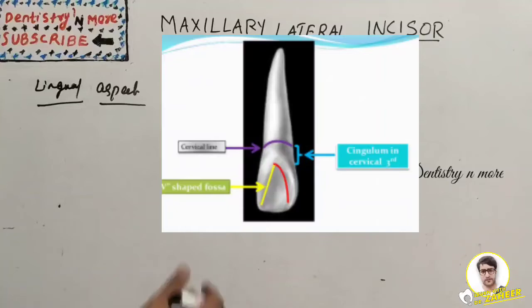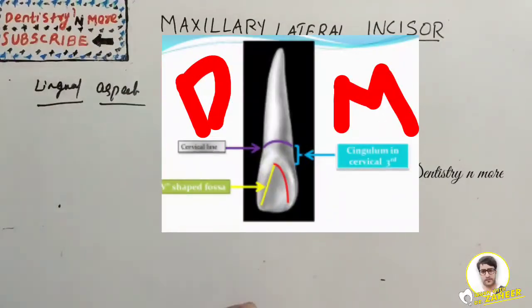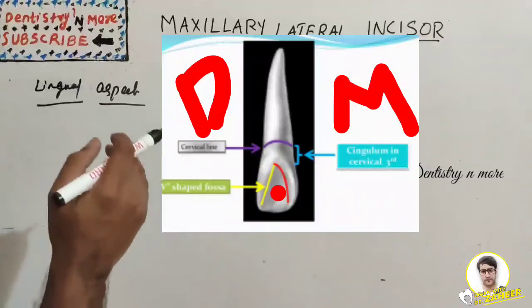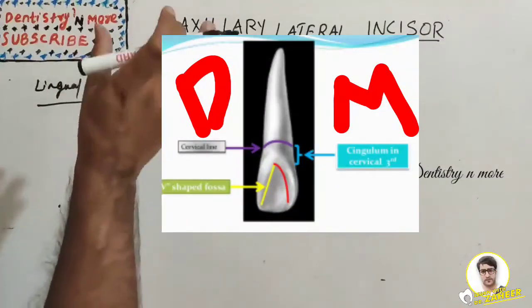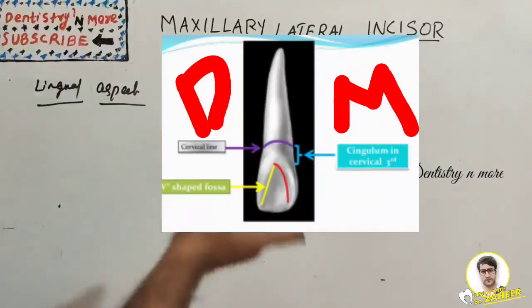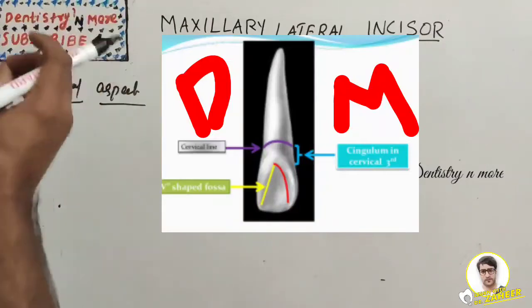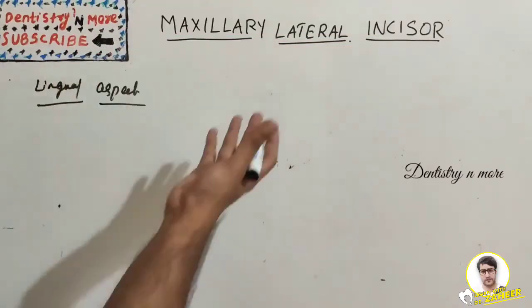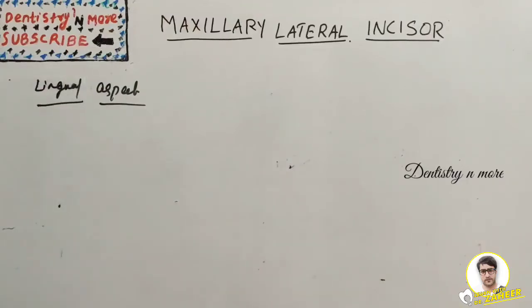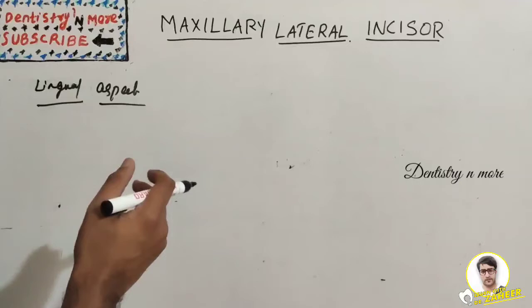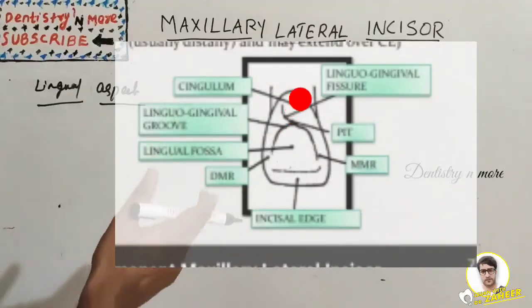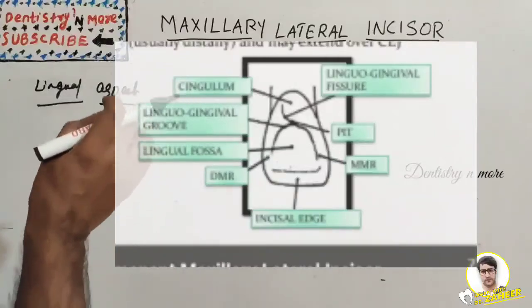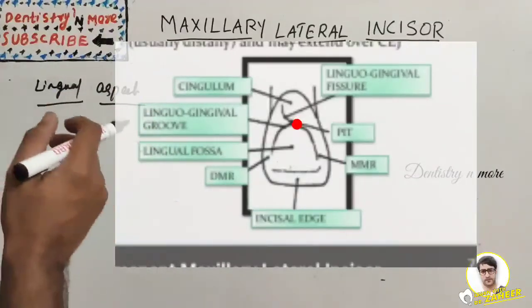On the lingual aspect: the mesial margin is more convex than the maxillary central incisor, and the distal margin is more rounded. The lingual fossa is deep, triangular-shaped, and occupies two-thirds of the lingual surface of the crown. Once you study the maxillary central incisor in detail, the remaining teeth become much easier. The cingulum is limited to the cervical third. You can see in the picture: the cervical line, the V-shaped fossa, and the cingulum in the cervical third.